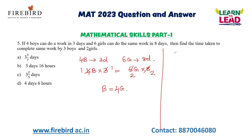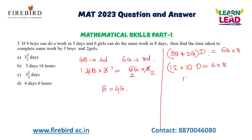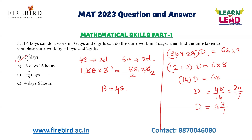They are asking: find the time taken to complete the same work by 3 boys and 2 girls together. Let them complete the work in D days. Since 6 girls complete the work in 8 days, converting boys to girls: 3 boys = 12 girls. So (12 + 2) × D = 6 × 8, giving 14D = 48, D = 48/14 = 24/7. This equals 3 and 3/7 days, which is your answer.